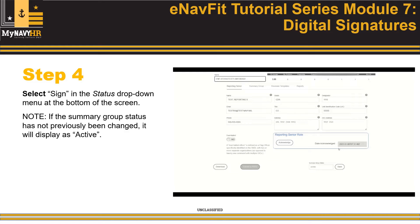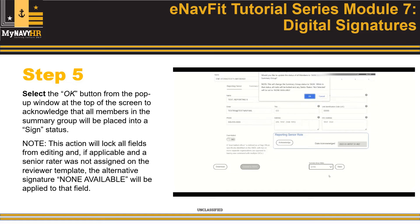Step 4: Select Sign in the Status drop-down menu at the bottom of the screen. If the summary group status has not previously been changed, it will currently say Active. Step 5: Select OK on the pop-up dialog window to acknowledge that all members in the summary group will be placed into a Sign status. Note that this action will lock the summary group for editing, and if applicable and a senior rater was not selected on the reviewer template, the alternative signature 'None Available' will be entered into that field.